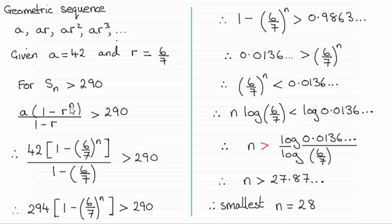So all we do is just use the sum of the first n terms of a geometric sequence. You should be familiar with this formula that it's a times all of 1 minus r to the power n all over 1 minus r.